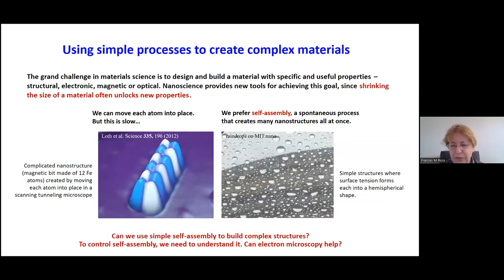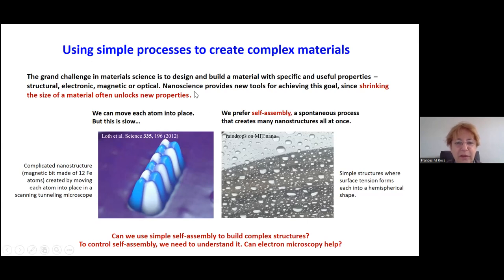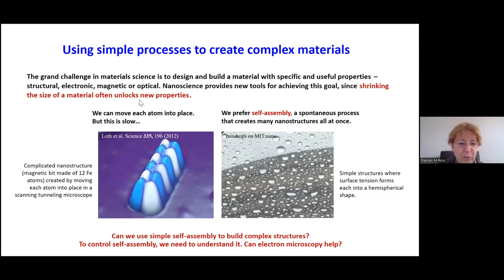These resolution and properties of electron microscopy make it ideal for addressing a really important grand challenge in materials science: to design and build materials that have specific useful properties — structural, electronic, optical, or whatever it might be. We often look to nanoscale science to provide new tools for this goal, because shrinking the size of a material often unlocks new properties. One way is to move each atom into place. This image is from scanning tunneling microscopy work from colleagues at IBM, where they made the world's smallest stable magnetic bit out of 12 iron atoms moved into place using the tip of the STM.